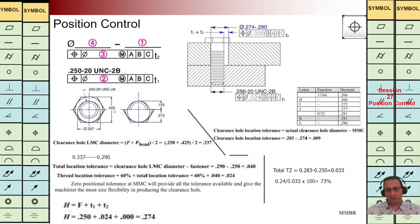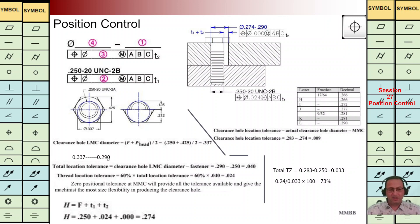Using the standard tables we can calculate what should be the head of the bolt — it is 0.425 — and the size of the bolt is 0.25. Half of these two values comes into the formula, from which we can calculate the LMC maximum hole diameter for the top part. It should be 0.337. Let's consider a value of 0.29, which should be between 0.25 and 0.337.